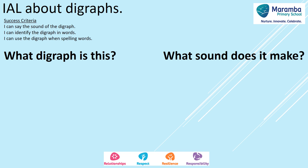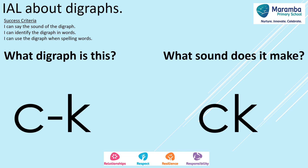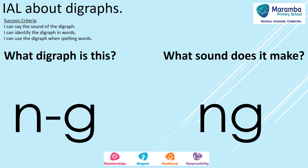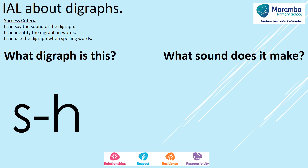What digraph is this? C, k — and it makes the sound 'ck'. Great job. What digraph is this? N, g — and it makes the sound 'ng'. What digraph is this? That's right — s, h — and it makes the sound 'sh'. Well done.